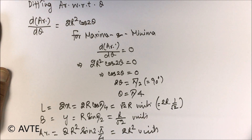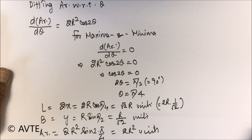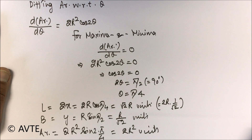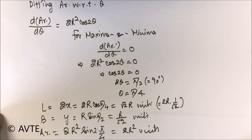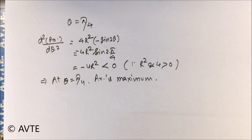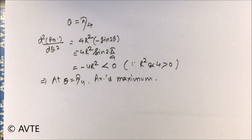So the rectangle inscribed in the semicircle has length root 2R units, breadth R by root 2 units, and area R squared units. If you are clear about what is given and what the target is, you can easily achieve it. Thank you very much.